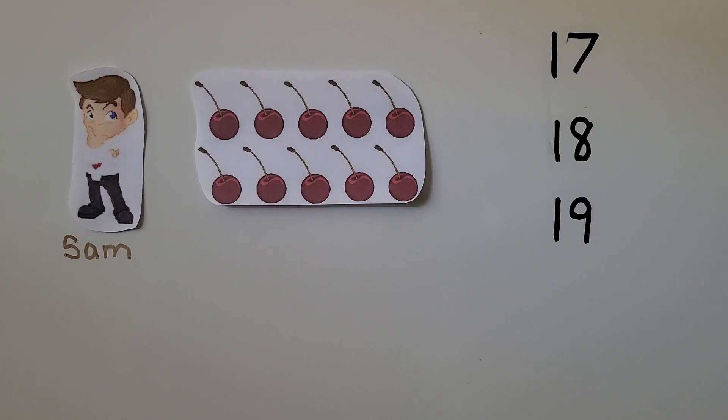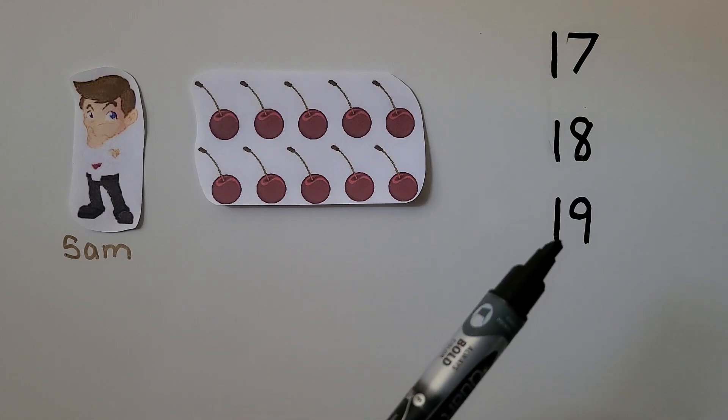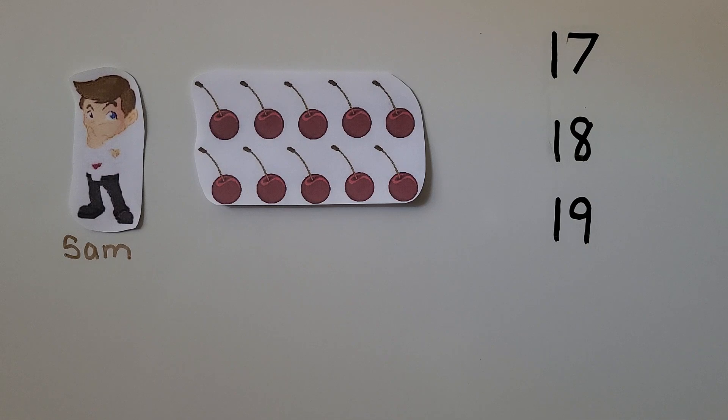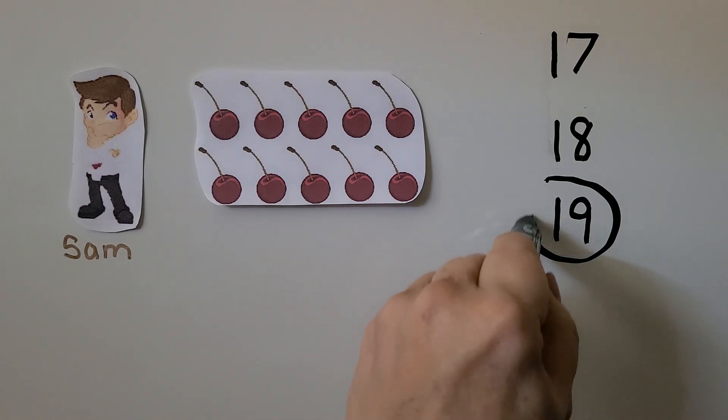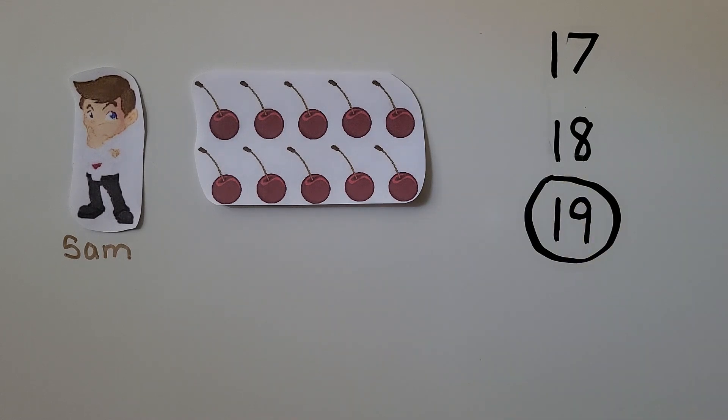Here's Sam. Sam has 1 more than 18 cherries. If he said 19, you're correct. 1 more than 18 would be 19. It's the next number in counting order. We need to draw more cherries to show 19.